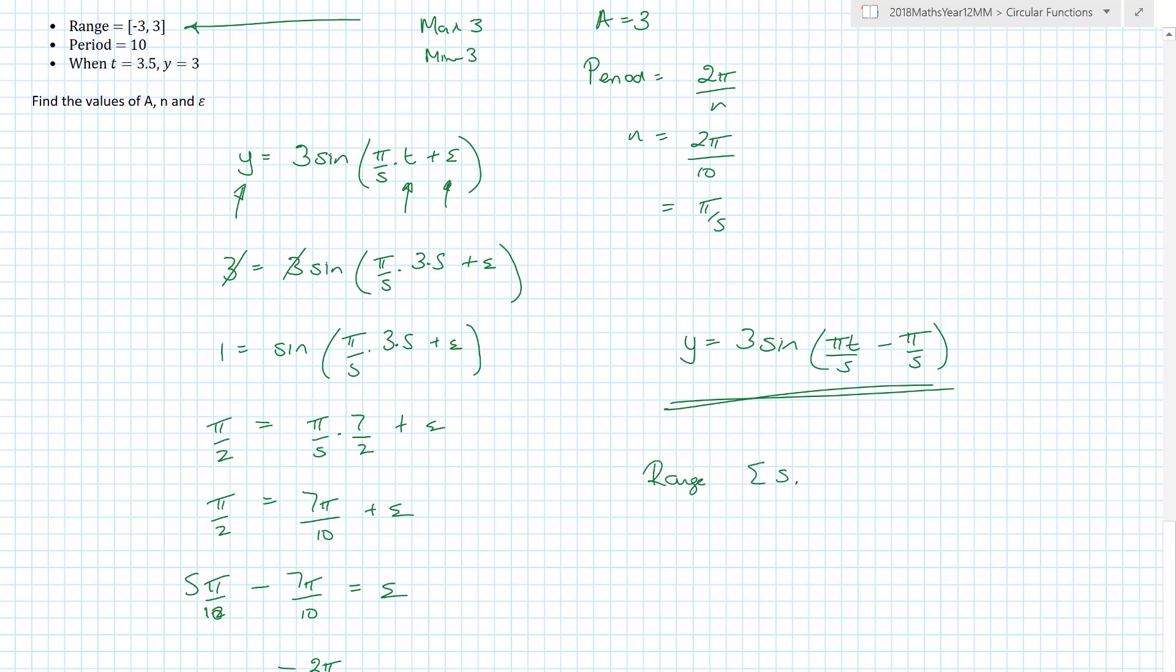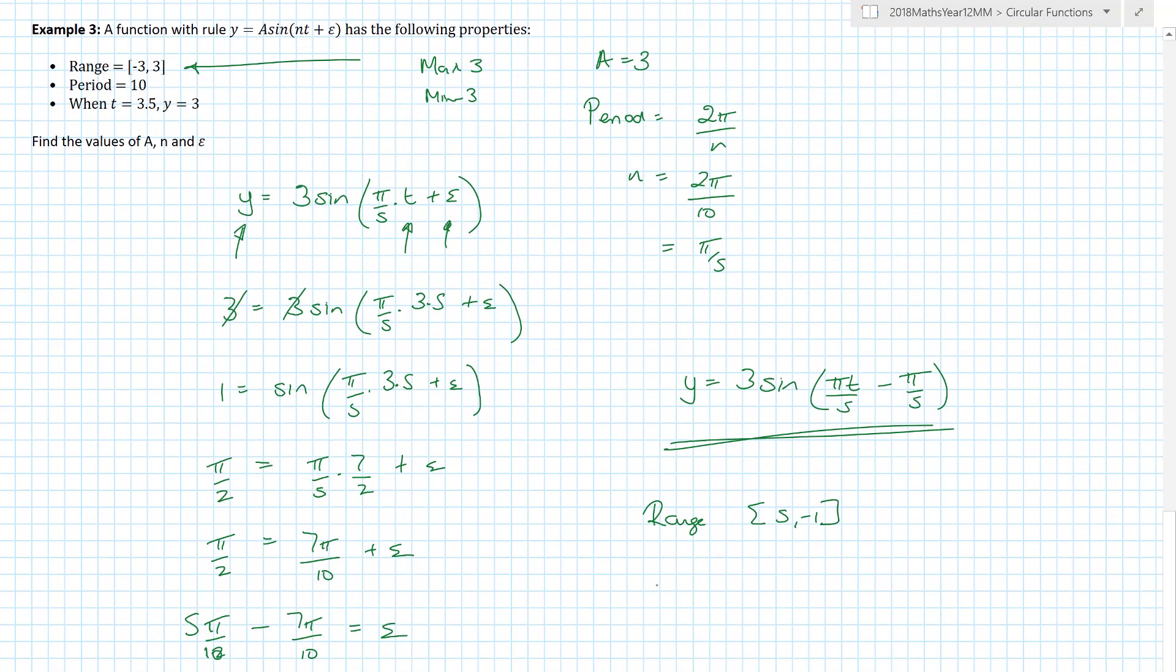If for example they've given me the same question and I've had the range but actually had it falling between sort of 5 and minus 1, then what you would have ended up with is you'd have had an equation that said y is equal to a sine nt plus epsilon plus B.